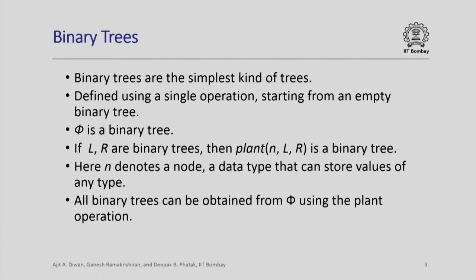The push operation was used to define sequences; for binary trees we define an operation called plant. An empty binary tree always exists, so phi is always a binary tree. If we have two binary trees l and r, then by applying the operation plant(n, l, r) we get a new binary tree, where n denotes a node — essentially a generic type that can store values of any type — and we build a new tree from two existing trees l and r by planting them at node n.